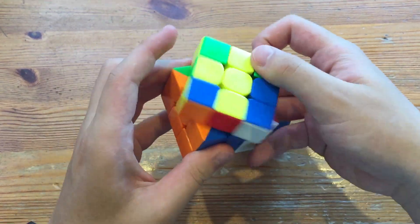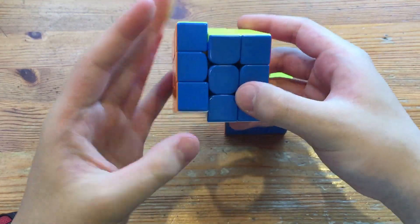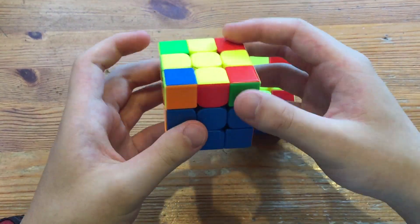So the COLL goes like this, but most people execute it something like that, which has a lot of re-grips.